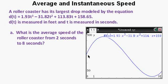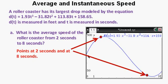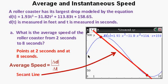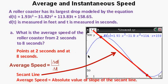What is the average speed of the roller coaster from 2 seconds to 8 seconds? Here are the points on the graph marked at 2 seconds and 8 seconds. The average speed is the absolute value of delta D over delta T. The line connecting these points is the secant line. The average speed is the absolute value of the slope of the secant line.